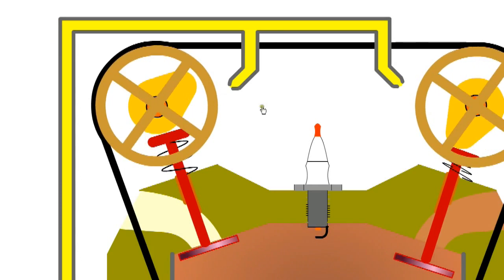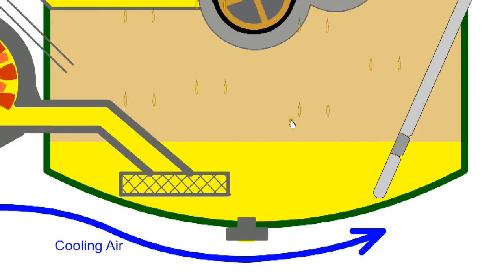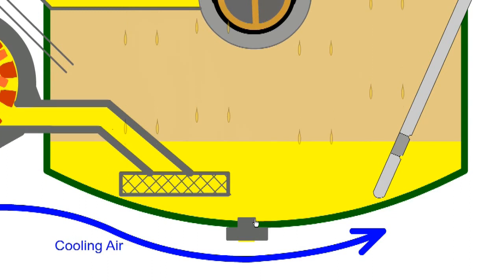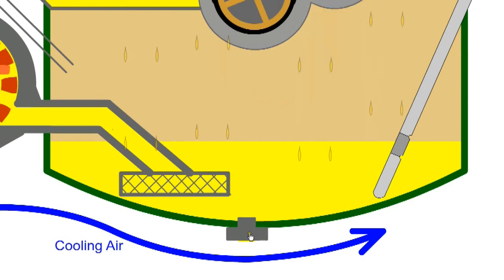When the oil has completed its work, it drains by gravity back to the sump where the heat is dissipated to the surrounding air. Any metal particles in the oil will be deposited at the bottom of the sump where they will be attracted to the magnetic drain plug.